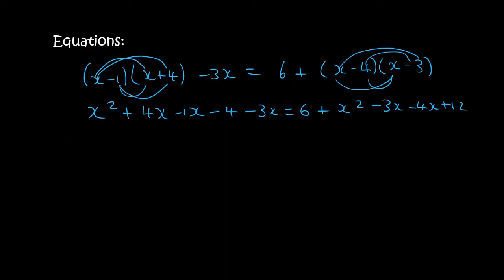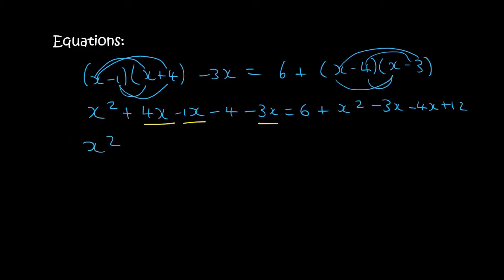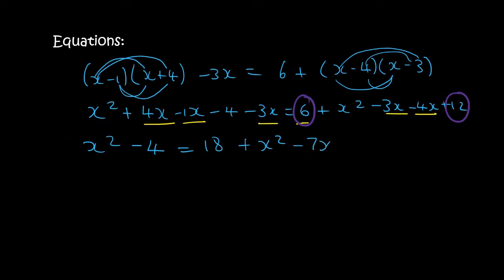On the left-hand side there are like terms to combine. So we get x squared, then 4x minus 1x is 3x, and 3x minus 3x is 0 — so the x's cancel out. Then minus 4. On the right-hand side, the 6 and 12 become 18, and the minus 3x and minus 4x become minus 7x.